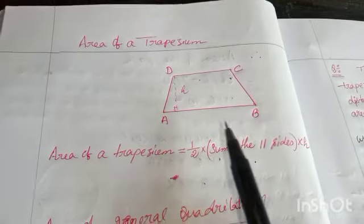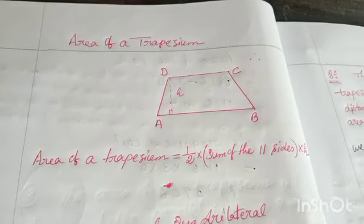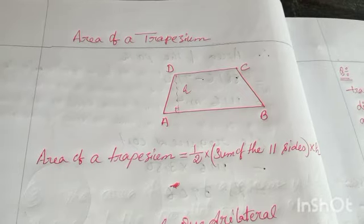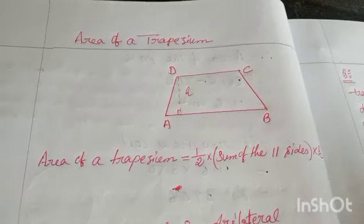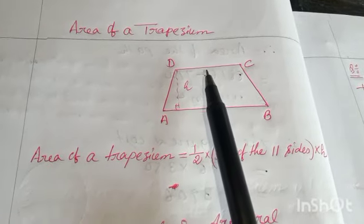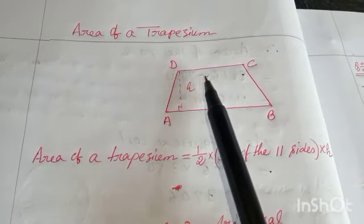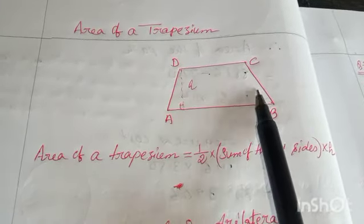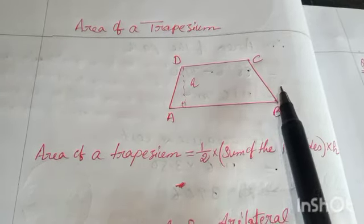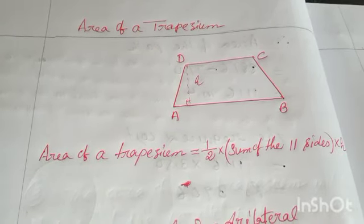This is a trapezium. What is a trapezium? A quadrilateral in which one of the opposite pairs of sides is parallel. One of the opposite pairs is parallel. Here you can see these are the opposite pairs — they are parallel: DC and AB. And the other two sides, AD and BC, are non-parallel. They are called non-parallel sides. If one of the opposite pairs is parallel, then the figure is called a trapezium.